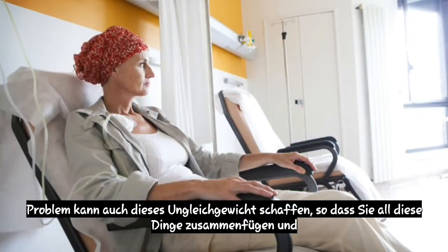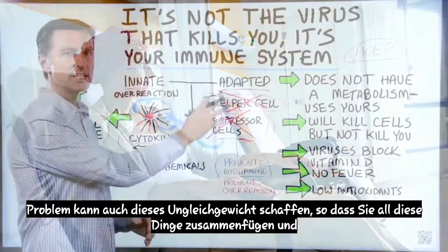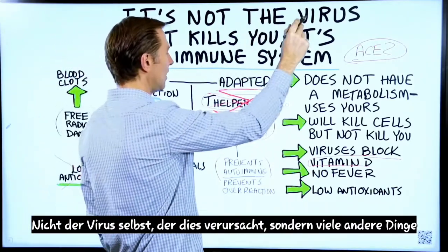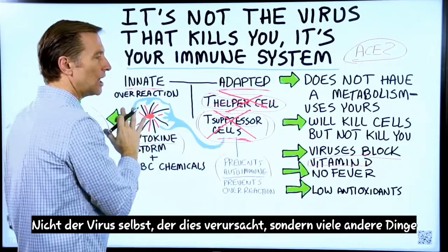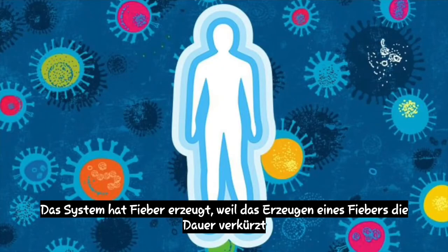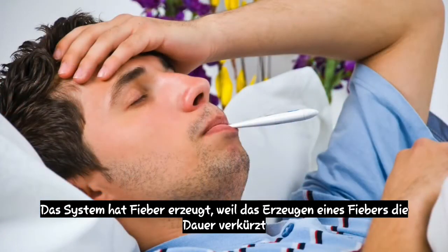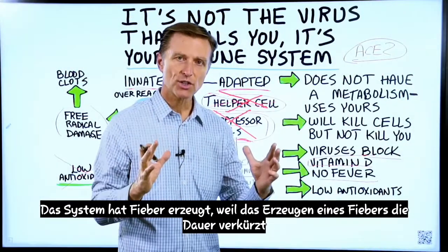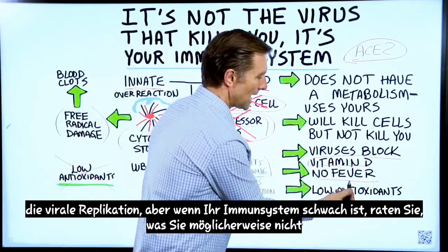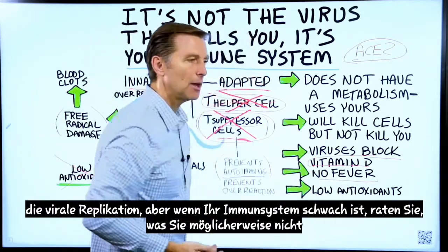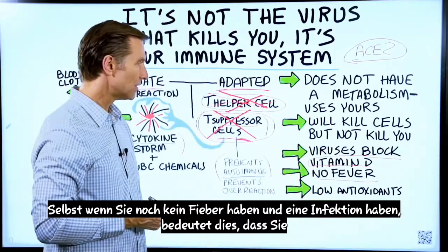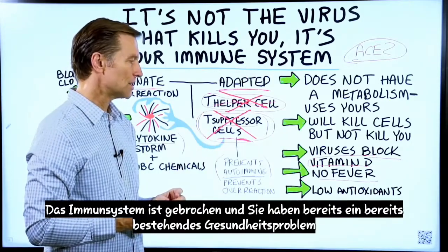Certain viruses can create this imbalance, and having a pre-existing health issue can create it as well. Put all these things together and you're really at risk. One of the defense mechanisms your immune system has is creating a fever, because a fever decreases the duration of infections — it increases your chances of living because it slows down viral replication. But if your immune system is weak, you may not even have a fever. Not having a fever yet having the infection means your immune system is broken.